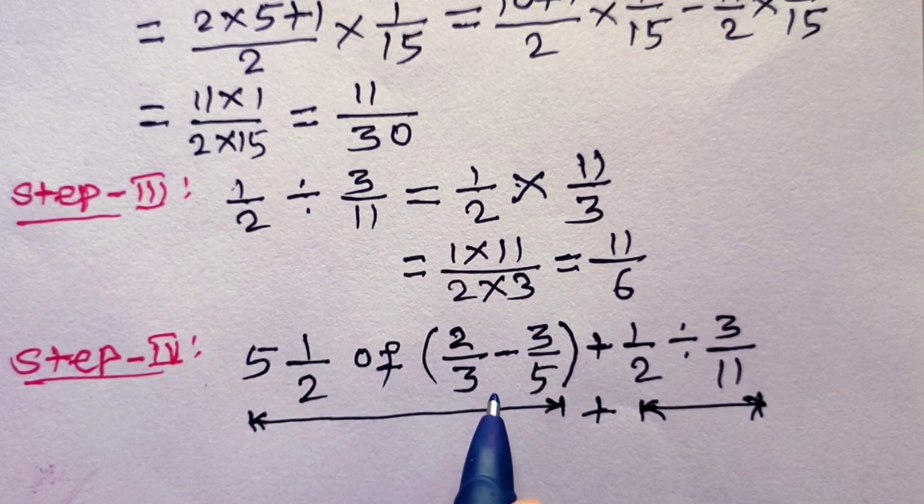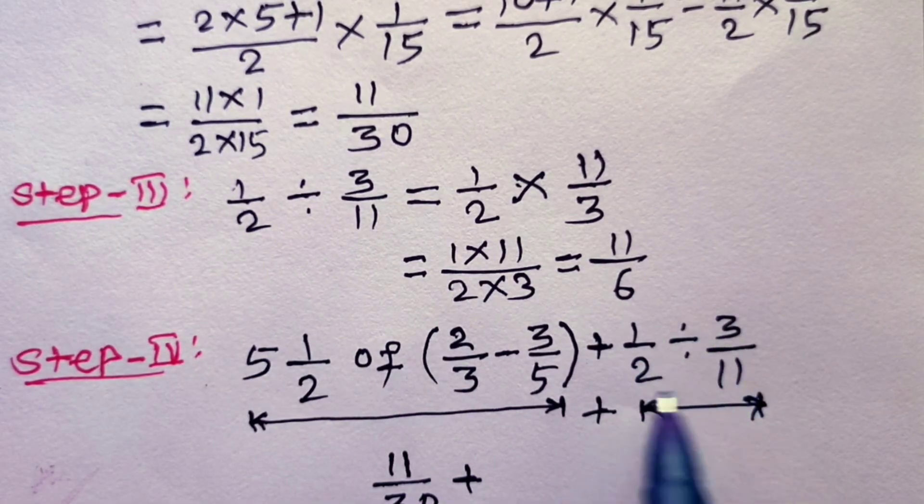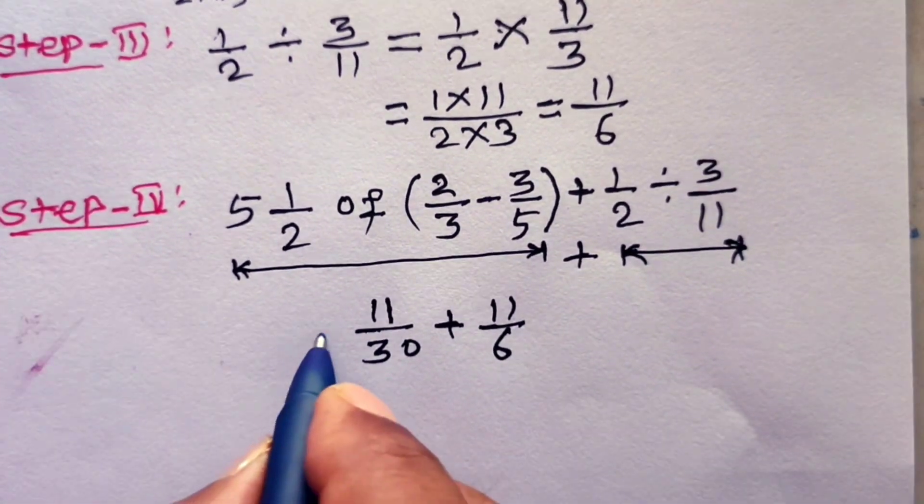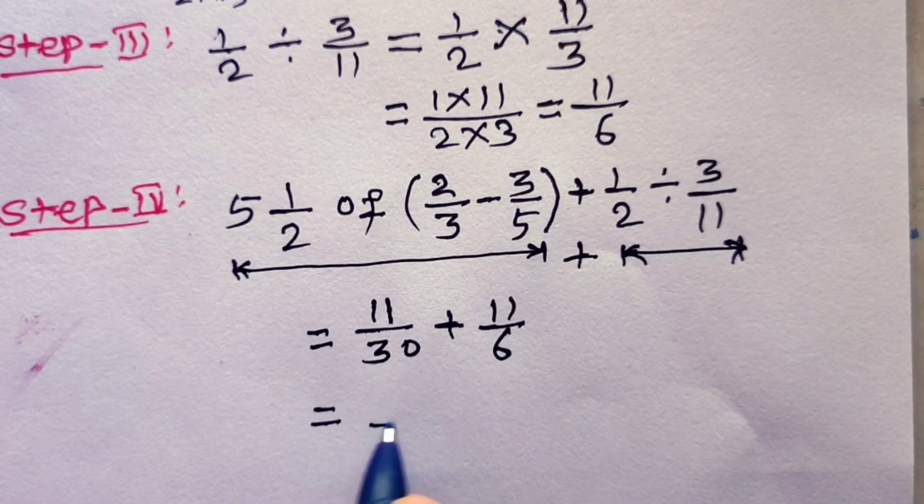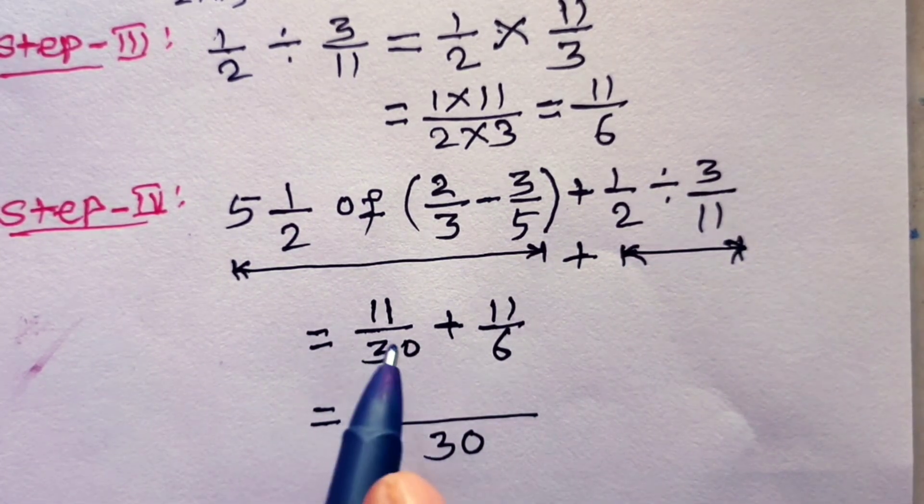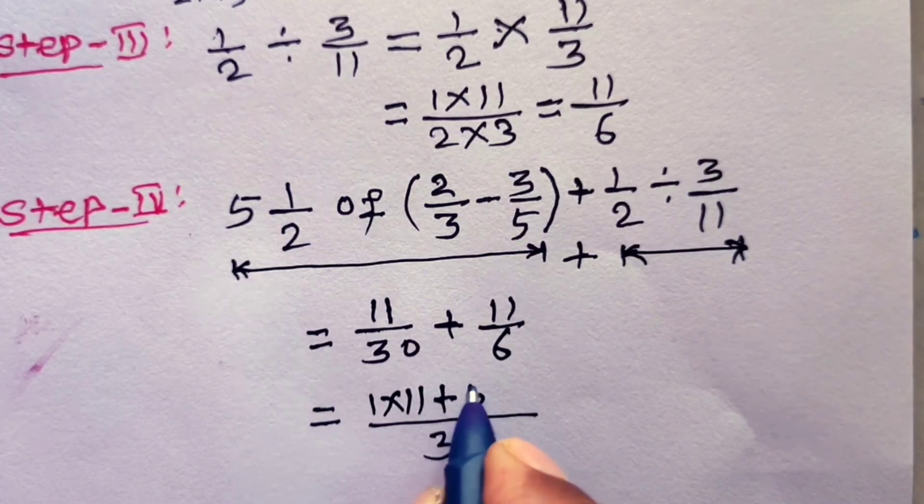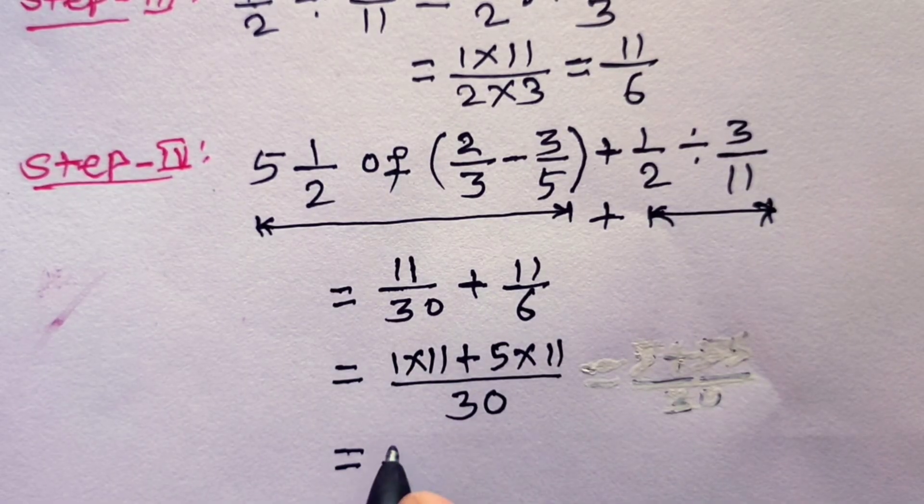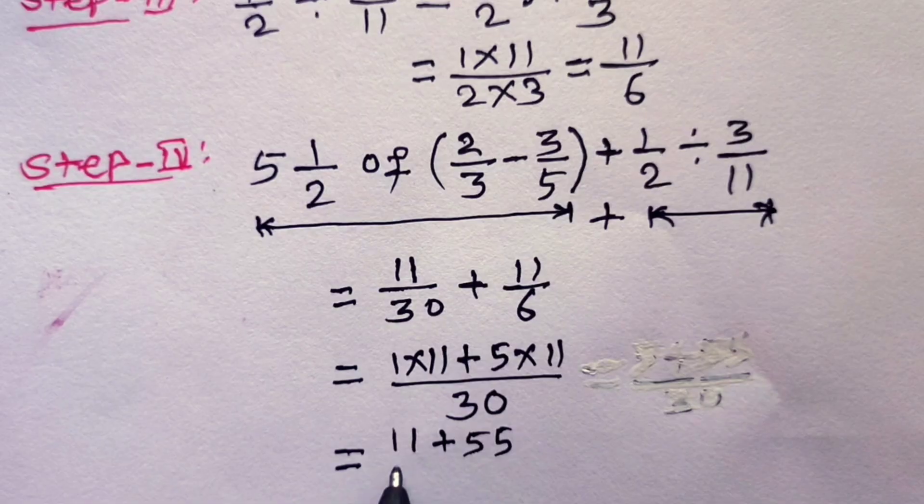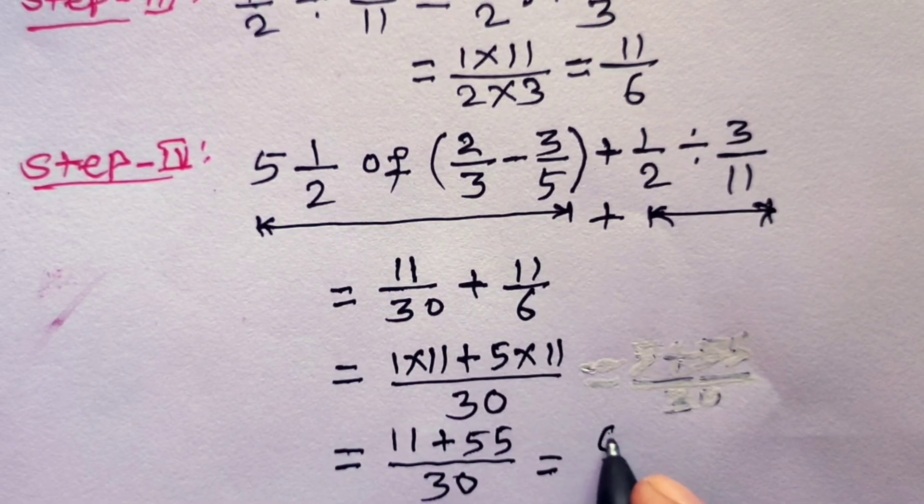This is equal to, LCM of denominator 30 and 6 is 30. Hence, 30 is 30, 1 into 11, plus 6 goes into 30, 5 into 11. Now 1 into 11 is 11 plus 5 into 11 is 55 over 30. This is equal to 11 plus 55 is 66 over 30.